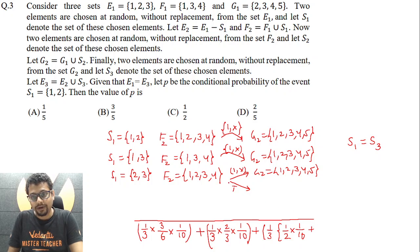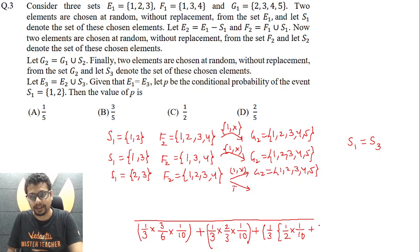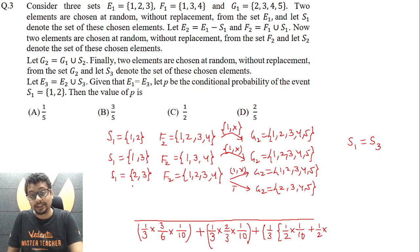Sub-case B: 1 is not selected, meaning any two of {2,3,4} are chosen — 3C2=3, divided by 4C2=6, so probability = 1/2. G2 becomes {2,3,4,5}. S3 should be {2,3}, so favorable = 1 and total = 4C2 = 6.